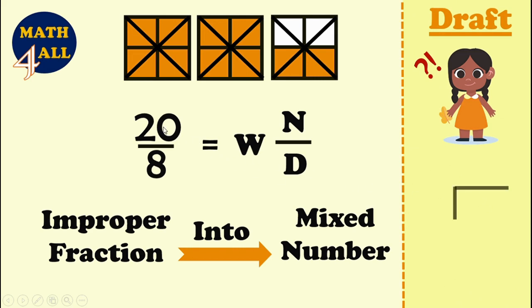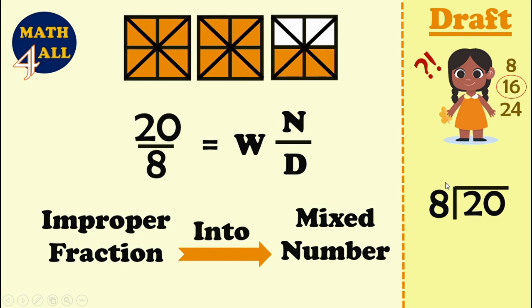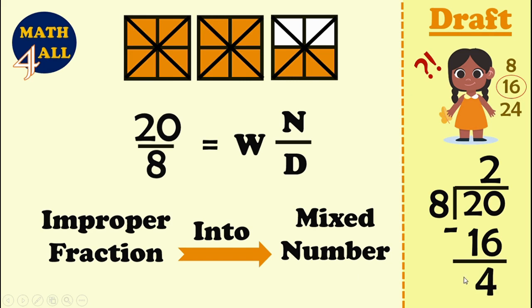Divide 20 by 8. Remember the table of 8: 8×1=8, 8×2=16, 8×3=24. Since 24 is more than 20, we stop at 16. That means 8×2, so you write 2. Multiply 8 by 2 to get 16, then subtract: 20 minus 16 equals 4. The remainder is 4.